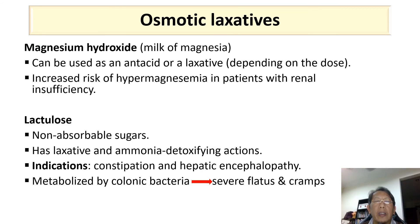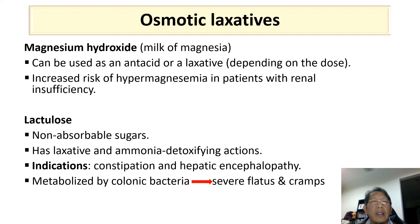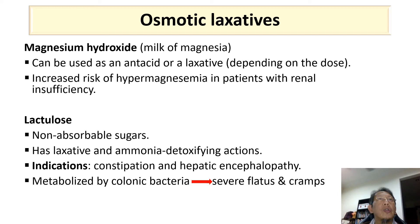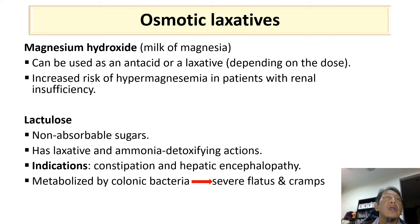For osmotic laxatives, magnesium hydroxide or magnesium citrate are non-absorbable salts. They can be used as an antacid and also as a laxative, depending on the dose. The adverse effects involve an increased risk of hypermagnesemia in patients with renal insufficiency.